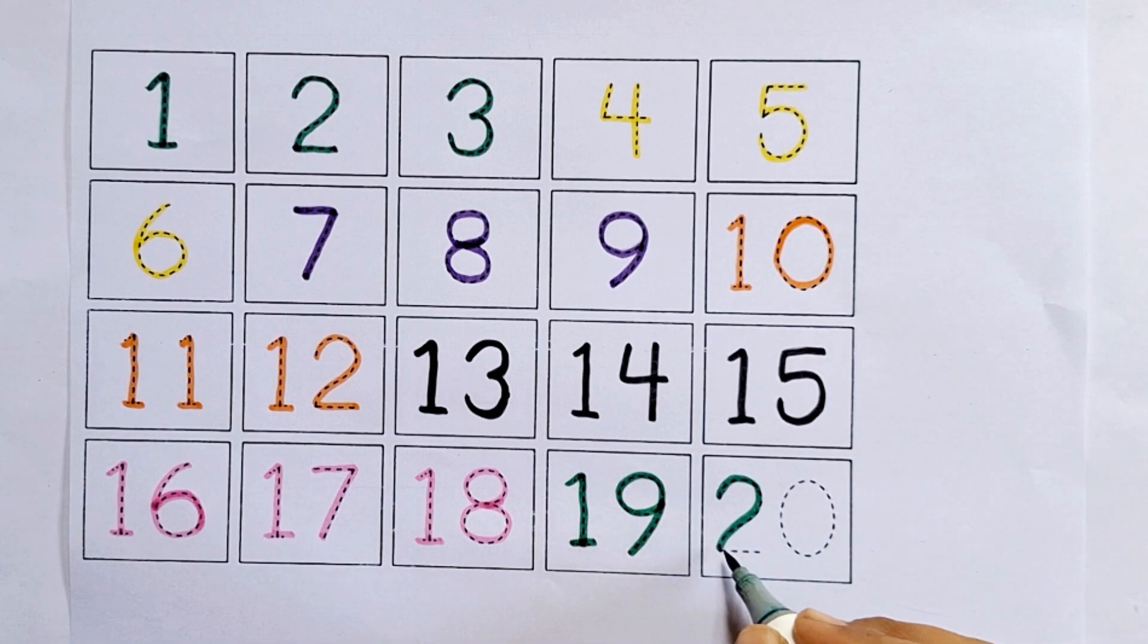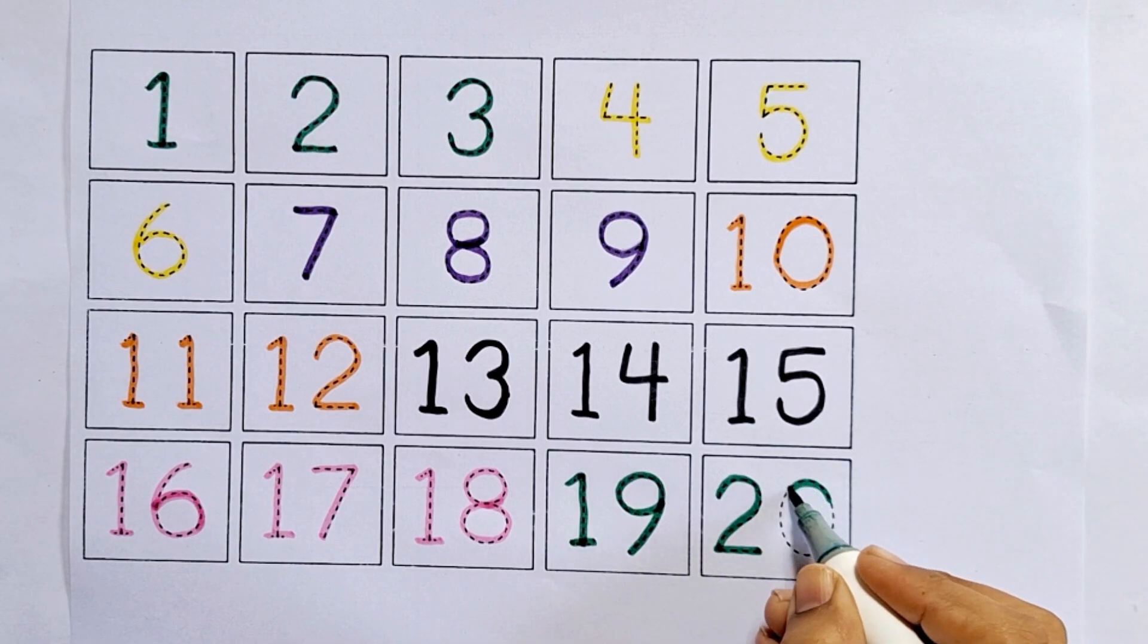Twenty, two, zero, twenty. After nineteen comes twenty.